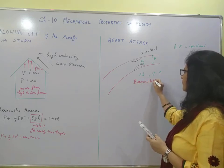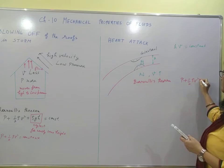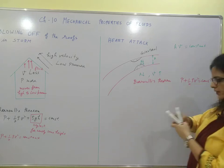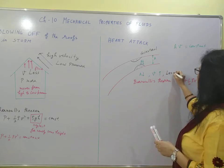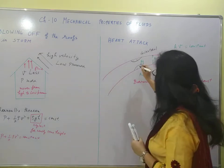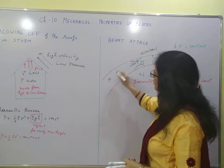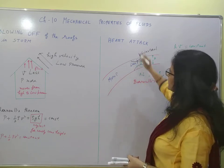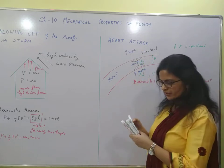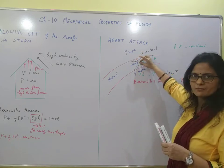Applying Bernoulli's theorem at the same height: P plus half rho v squared equals constant. If velocity is more, pressure will be less. So at the narrowed opening, the pressure is less. Outside the artery, the pressure is comparatively more, and more blood is pulled from the heart side.